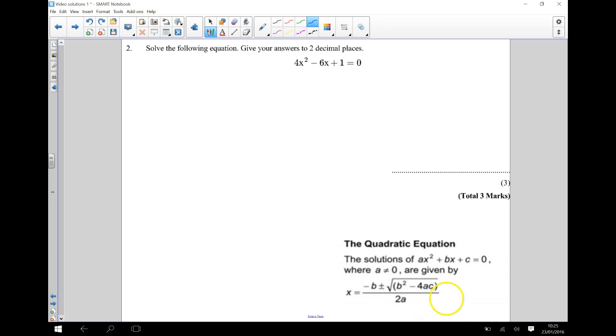This is the quadratic formula over here. Now our first thing to do when we're using a quadratic formula is to write down what the values of a, b and c are. So it says here ax squared plus bx plus c and we match the a, the b and the c to this here.